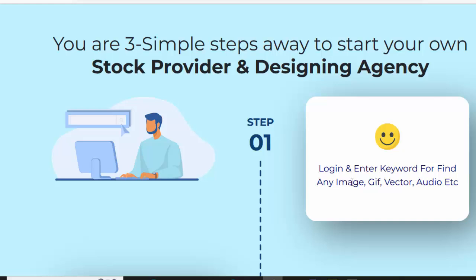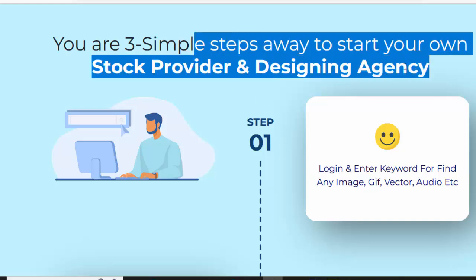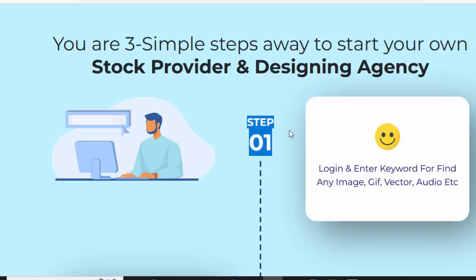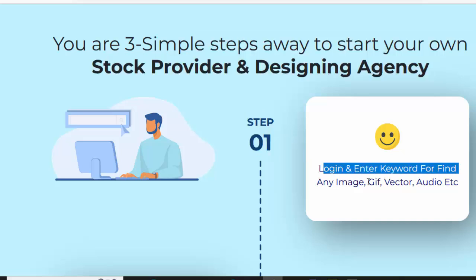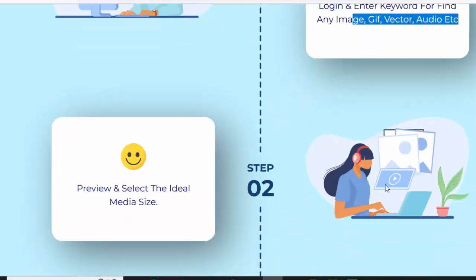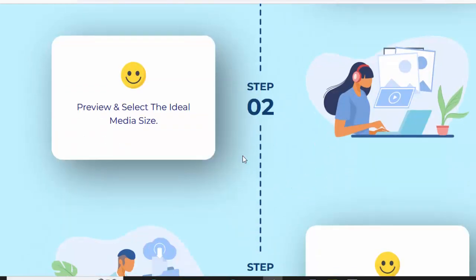You are three simple steps away to start your own stock provider and designing agency. Step 1: Login and enter a keyword to find any image, GIF, vector, audio, etc. Step 2: Preview and select the ideal media size. Step 3: Select and download.